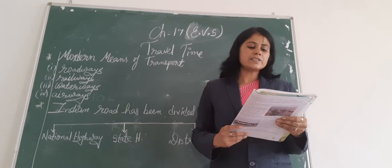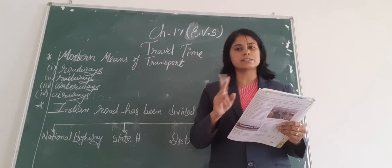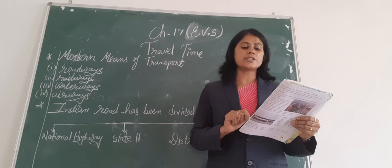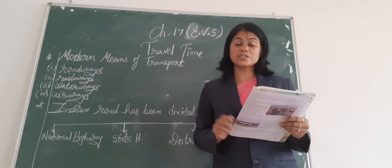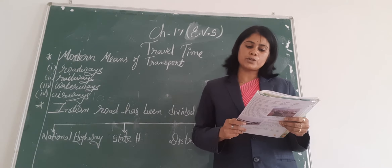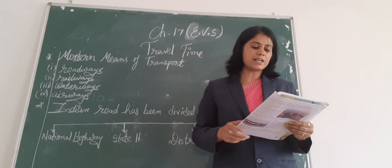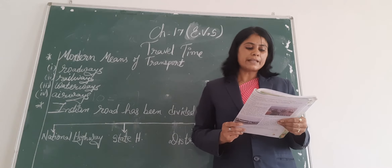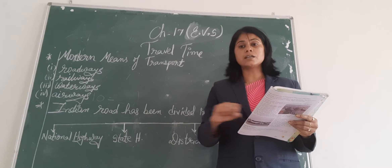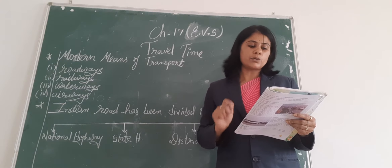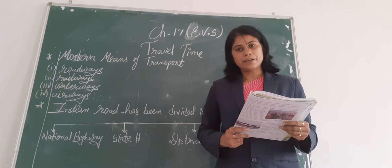National highways connect the important cities of India with each other. The longest national highway in India is historically associated with Sher Shah Suri, known as the Grand Trunk Road. It was built in 1542 by Sher Shah Suri and runs from Kolkata to Peshawar, which is now in Pakistan. The Golden Corridor joins Delhi, Kolkata, Mumbai, and Chennai — connecting these four cities. It is the biggest highway project launched in India.